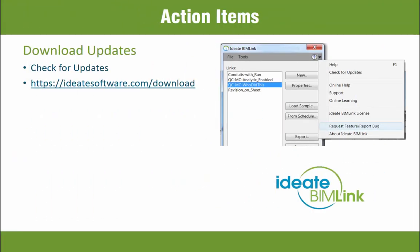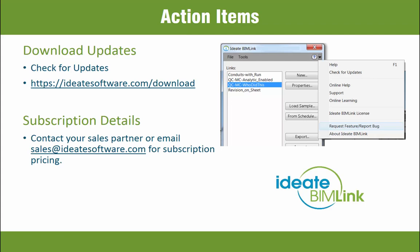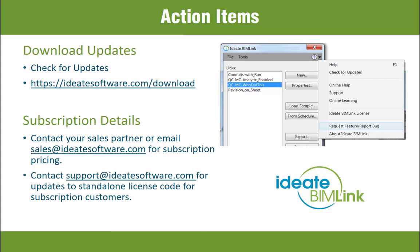There are two ways to access this new release. From within the BIMLINK application, you can find updates via the Help menu as shown. You can also download all of our software from the ideatsoftware.com download page. Starting with version 2019, ideatsoftware is available as subscription. Contact your local sales partner or email us at sales@ideatsoftware.com for any pricing questions. If you are an existing standalone subscription customer, you can request your new license code via support@ideatsoftware.com.